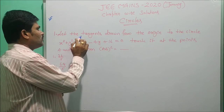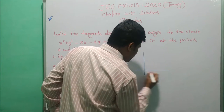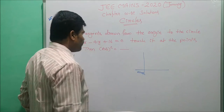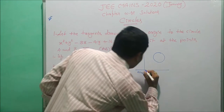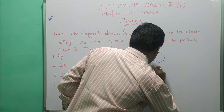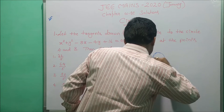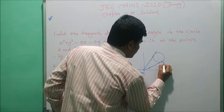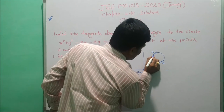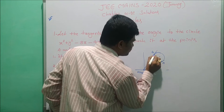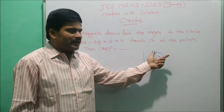In this problem, two tangents are drawn from the origin. We take one XY plane with origin O(0,0). We draw two tangents from this origin, and AB forms one chord of contact to the center.